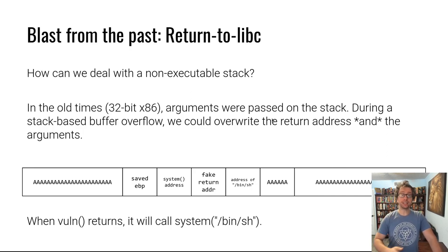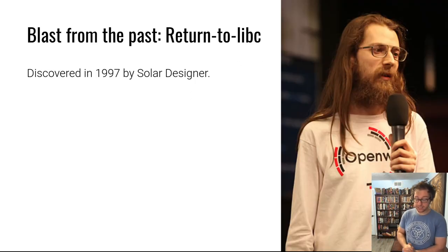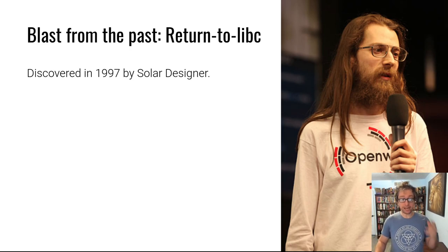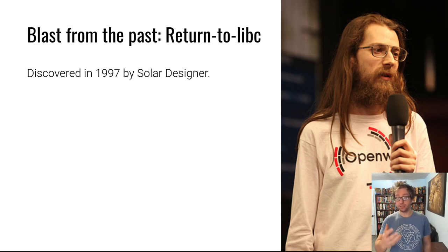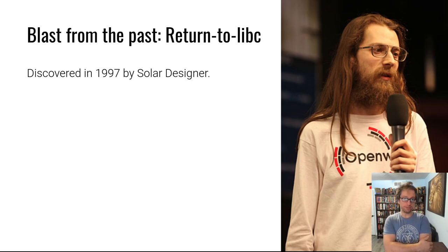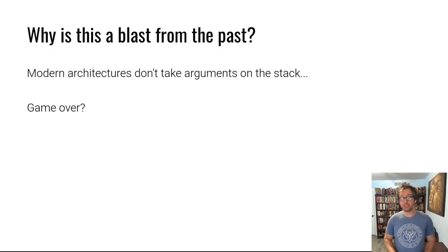You override the return address with an address inside libc — specifically the address of system — to accomplish your goals. It was discovered in the mid-90s by a hacker named Solar Designer, who actually discovered quite a lot of exploitation techniques. One of his claims to fame was the creation of return-to-libc in a mailing list post that basically said, 'I can bypass this sort of data execution prevention stuff that's coming around.' But this was back in the day on 32-bit x86, and that is just not what we're running anymore.